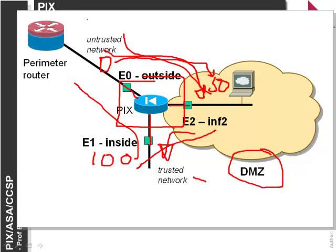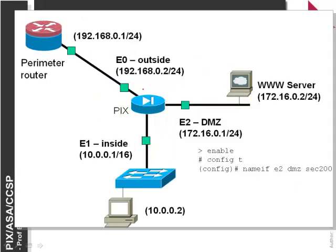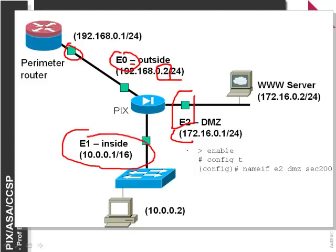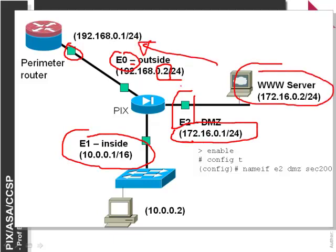To allow traffic we create a route into the network. As an example, our outside port might be at 0.2 with a main gateway. We have our DMZ on Ethernet 2, E0 is typically the outside, E1 is inside, and E2 is the DMZ. We can have a forward-facing web server placed in the DMZ.